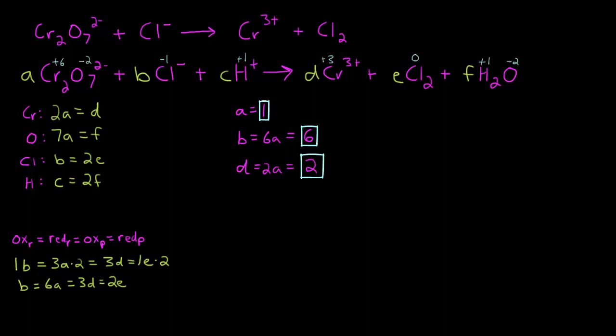Looks like we can use our chlorine equation to solve for E, so we've got 2E is equal to B. B is 6. Divide both sides by 2, we have E is equal to 3. Now it looks like we can use our oxygen equation to solve for F, so we have F is equal to 7A. A is 1, so F is equal to 7.